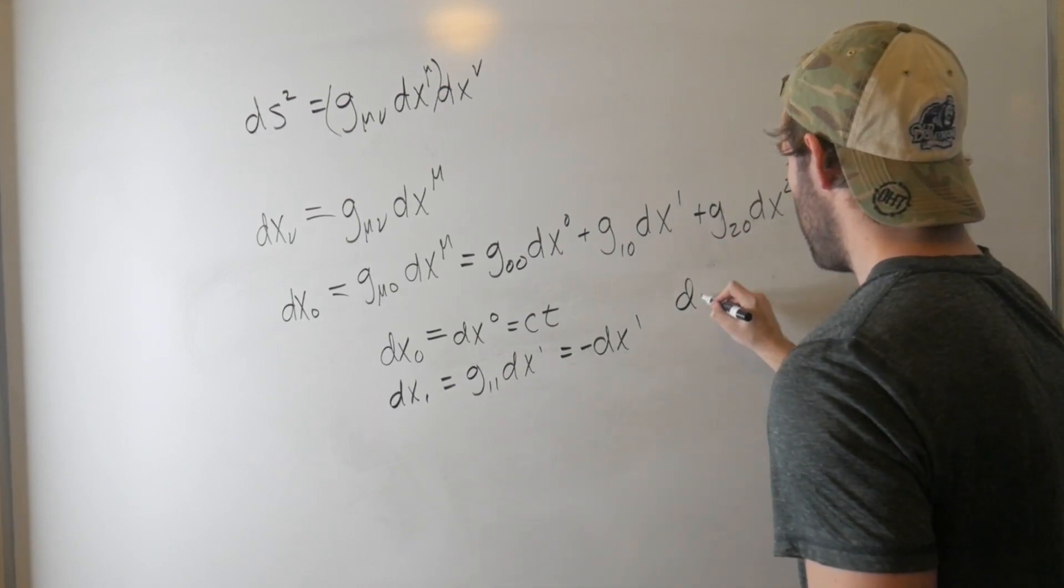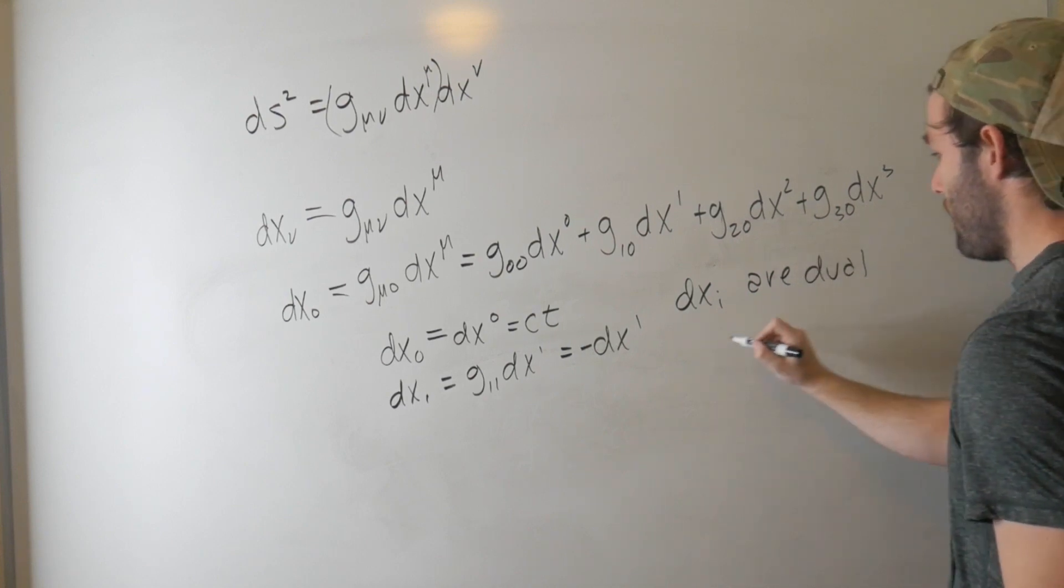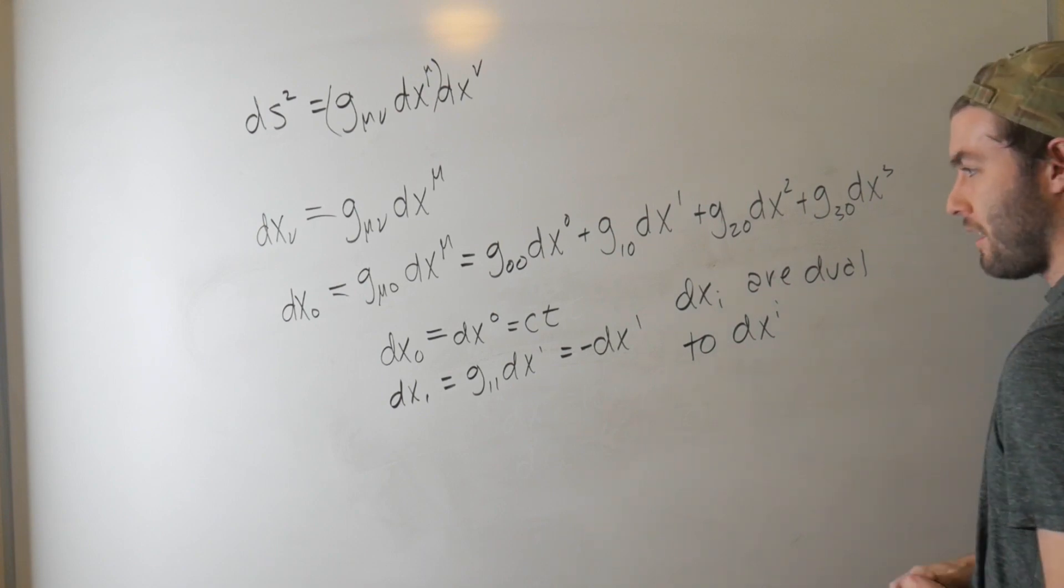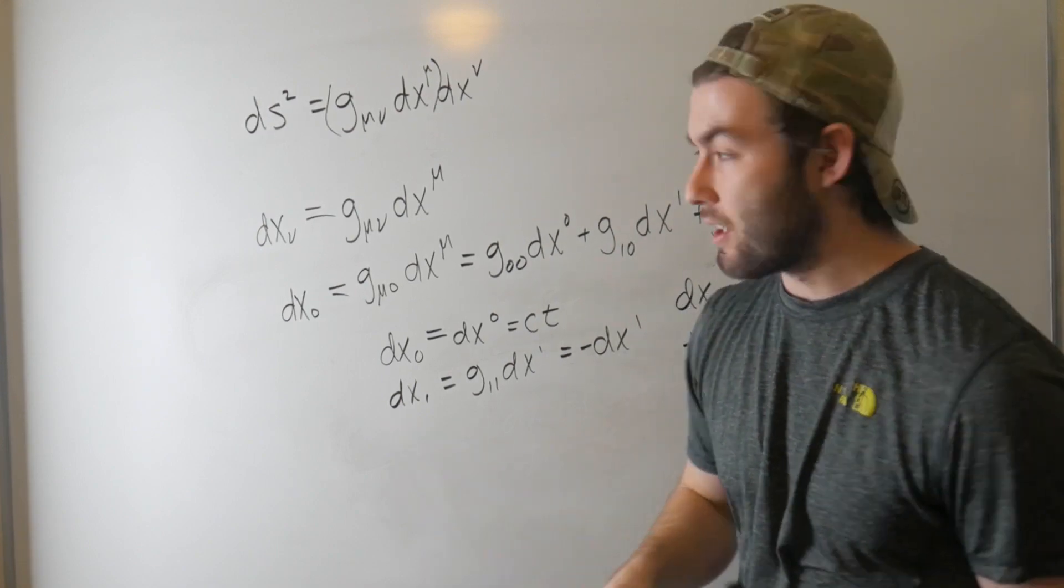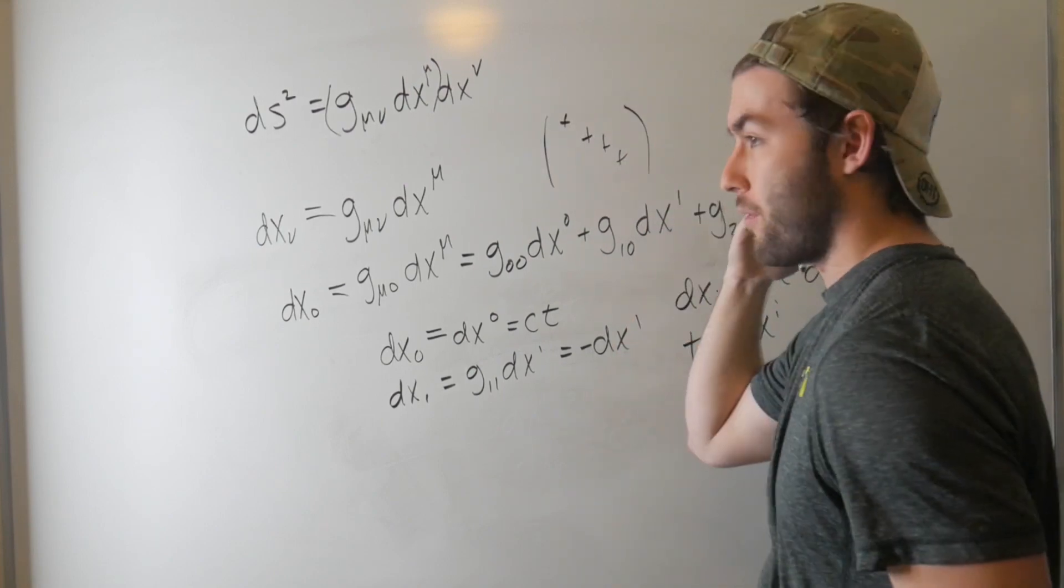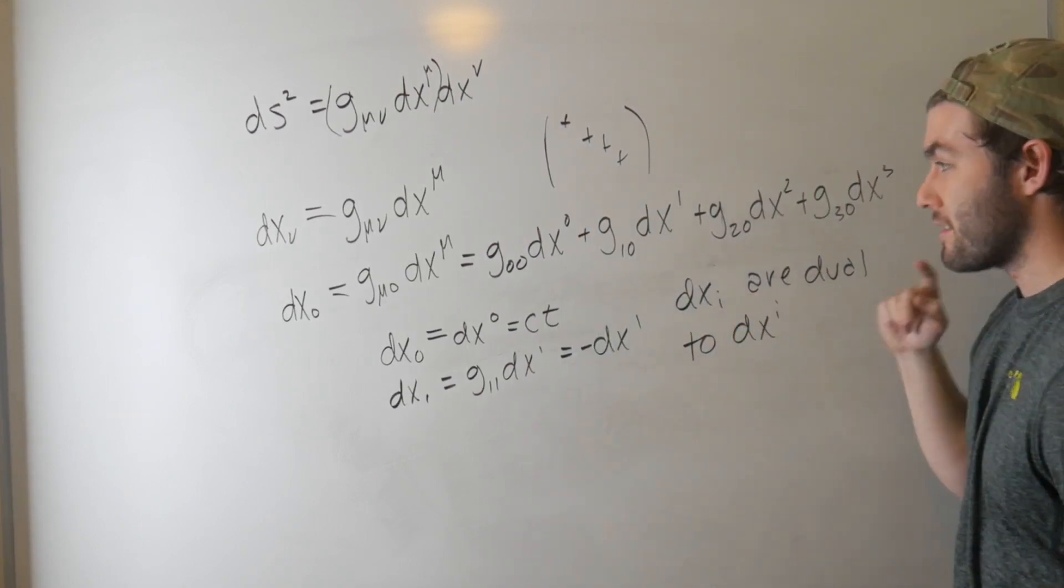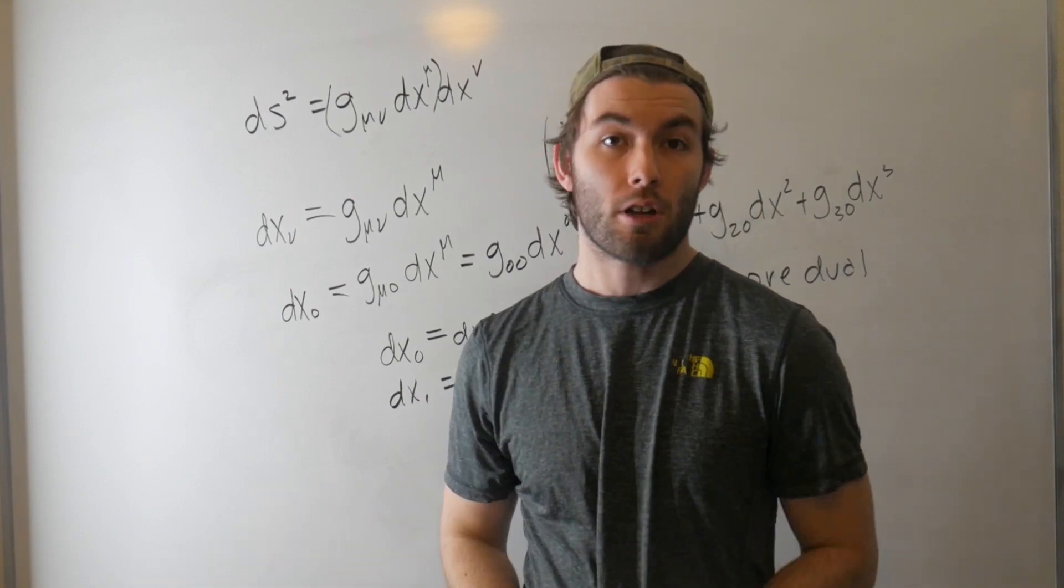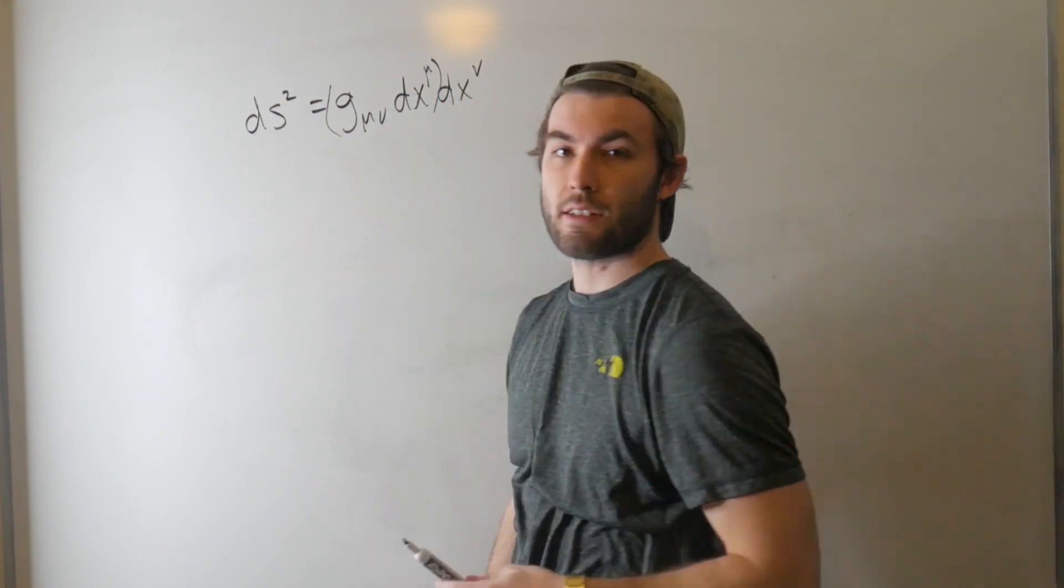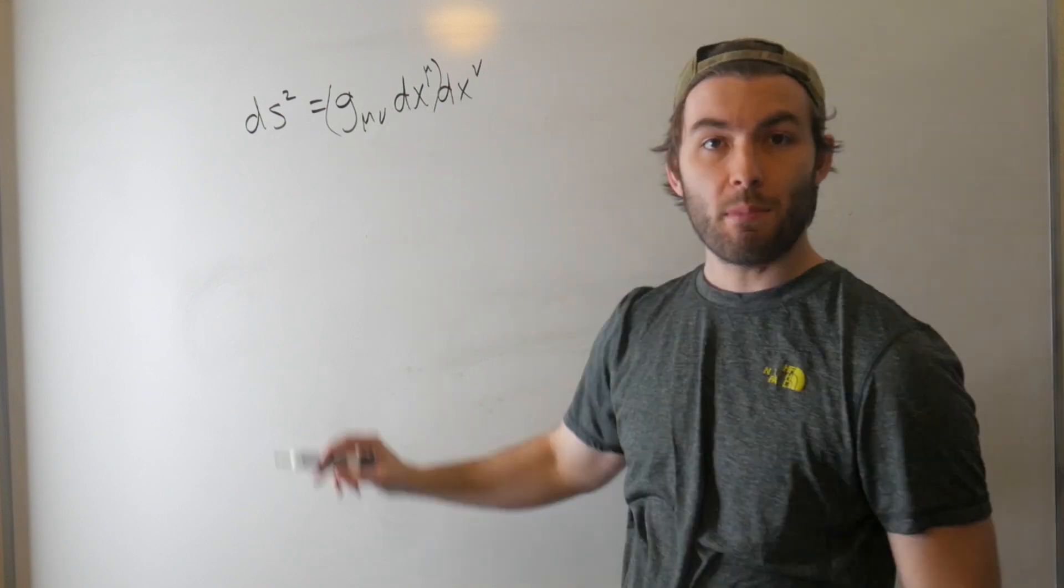So we say that the dx_i's are dual to the dx^i superscripts. And if we're working in a Euclidean space, the distinction is redundant because we have all these positives in the metric, and they don't change the signs. For the Minkowski metric, a pseudo-Riemannian geometry, the duals differ by a sign. And there's going to be a bunch of different distinctions depending on the geometry that you're actually working with.